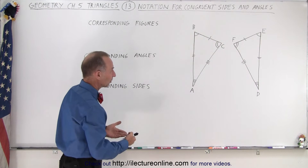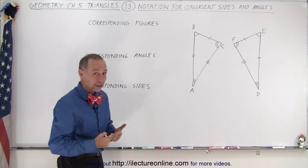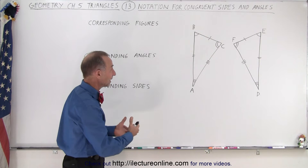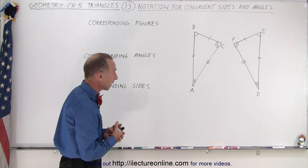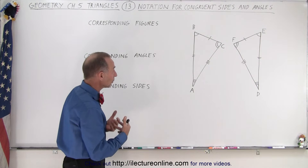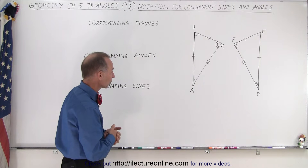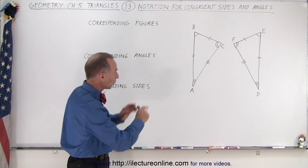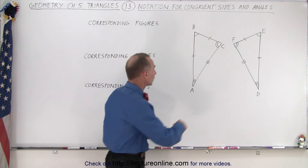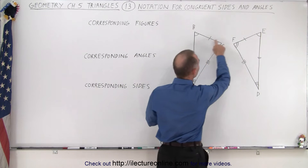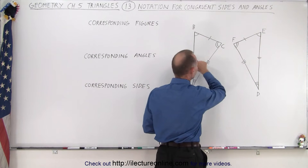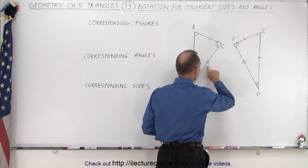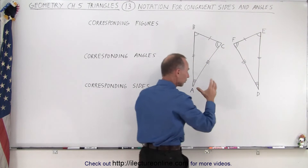Here we have two figures and supposedly they are congruent, which means that all the sides have the same length and all the angles have the same angular measure. Notice how they are notated here with one line through here, one line through here, two lines through here, two lines through there, three lines through here, three lines through there.